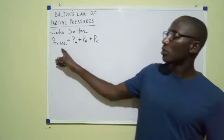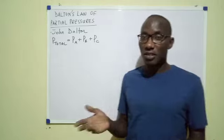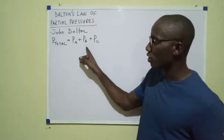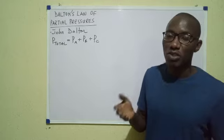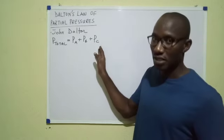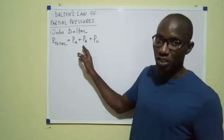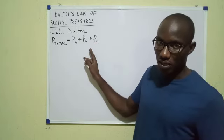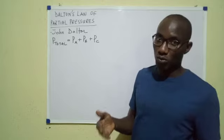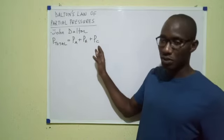In like manner, the total pressure exerted by a mixture of gases is simply the sum of their individual pressures. So assuming we have a mixture of gases A, B, and C, where the pressure of A is P-A, that of B is P-B, that of C is P-C, then the total pressure they will exert will be P-A plus P-B plus P-C.